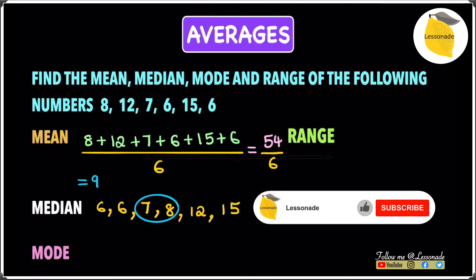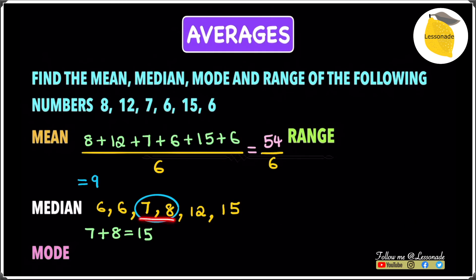To do that, we need to first add the 7 and the 8. So 7 plus 8 will give us 15. Then you have to do 15 divided by 2 because you have 2 numbers in the middle. 15 divided by 2 will give you 7.5. That means our median is 7.5.